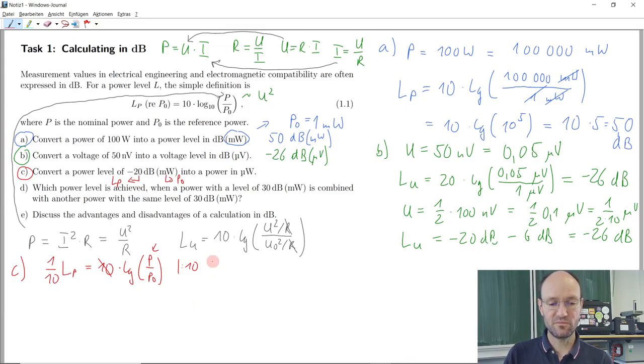So then, as you suggested, we can try to get rid of the decadic logarithm. We will take the whole equation, both sides, 10 to the power of whatever we have there. So on this side, we get 10 to the power of the power level divided by 10. And on this side, 10 to the power of the logarithm will just cancel each other, and we get power divided by our reference power.